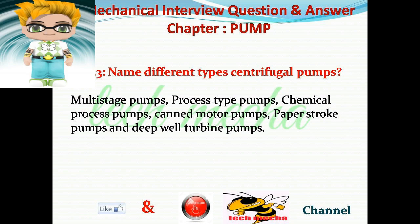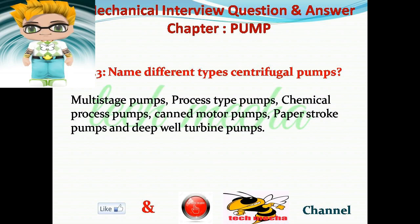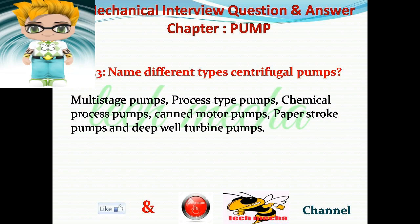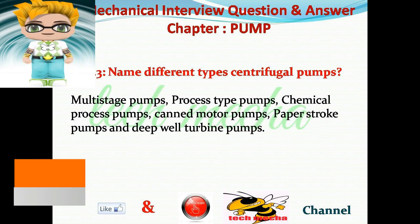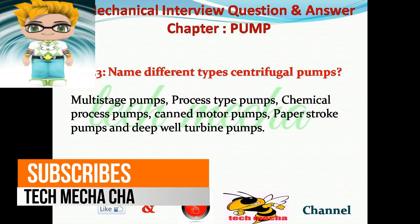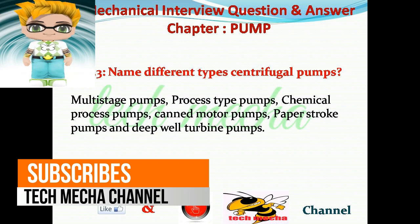Question number 3: Name different types of centrifugal pumps. Answer: Multistage pumps, process type pumps, chemical process pumps, canned motor pumps, paper stock pumps, and deep well turbine pumps.